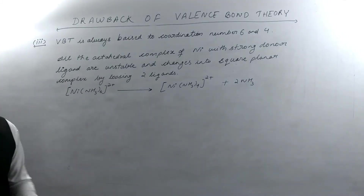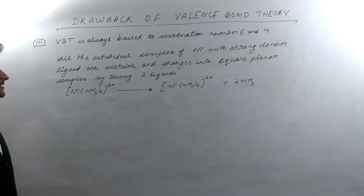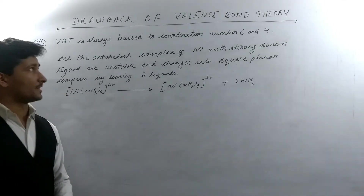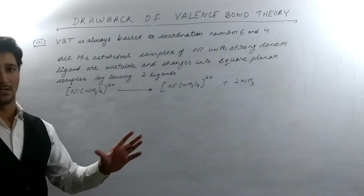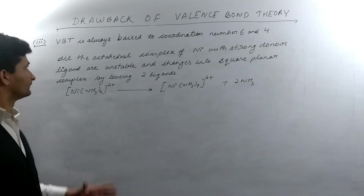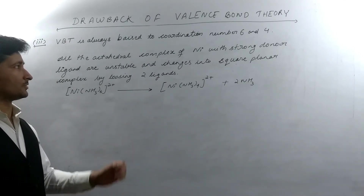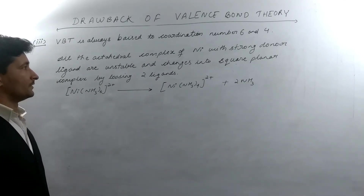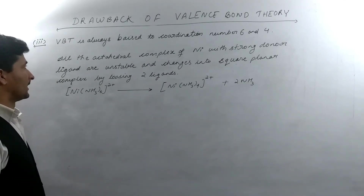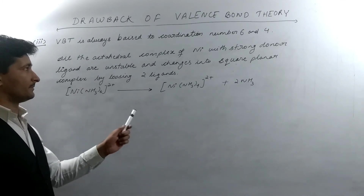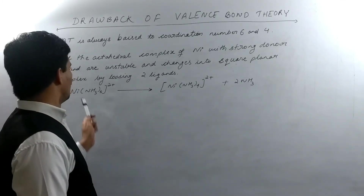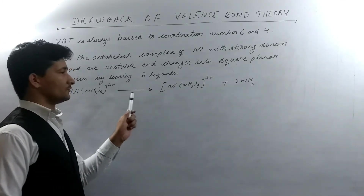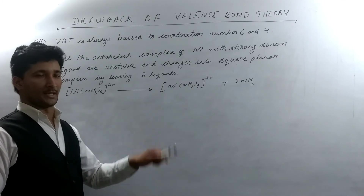Here is the third drawback of valence bond theory. Valence bond theory is always biased toward coordination numbers 6 and 4. All octahedral complexes of nickel with a strong donor ligand are unstable and change into a square planar complex by losing 2 ligands.